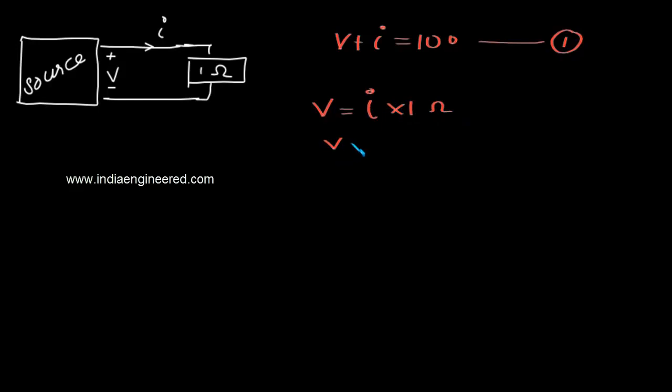That means V equals I in this circuit. So from equation 2 and equation 1, we can find that 2V or 2I equals 100.